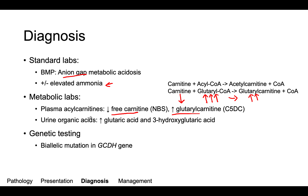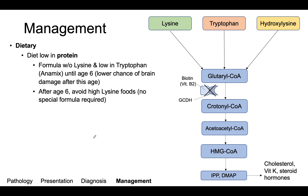The diagnosis can be confirmed with genetic testing showing a biallelic mutation in the GCDH gene. The management of this disease is primarily dietary, with patients instructed to eat a diet low in protein. This is particularly important early in life.